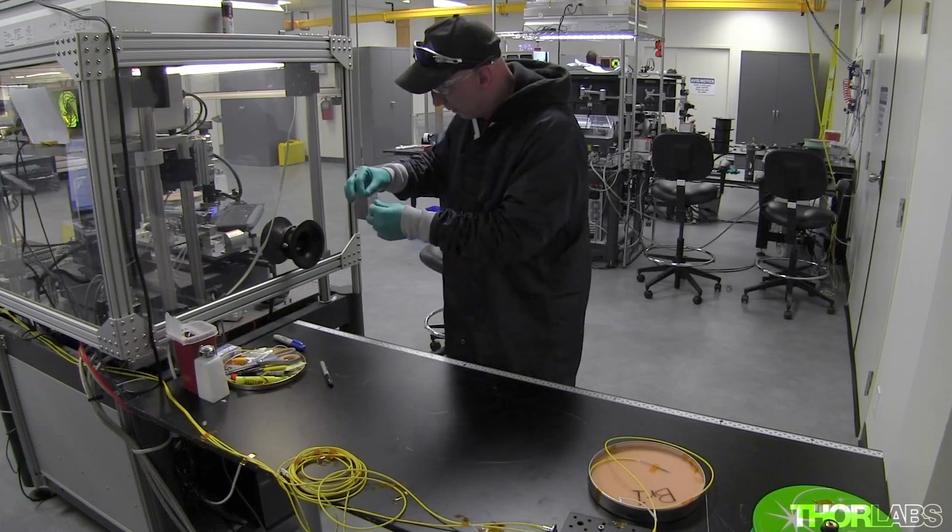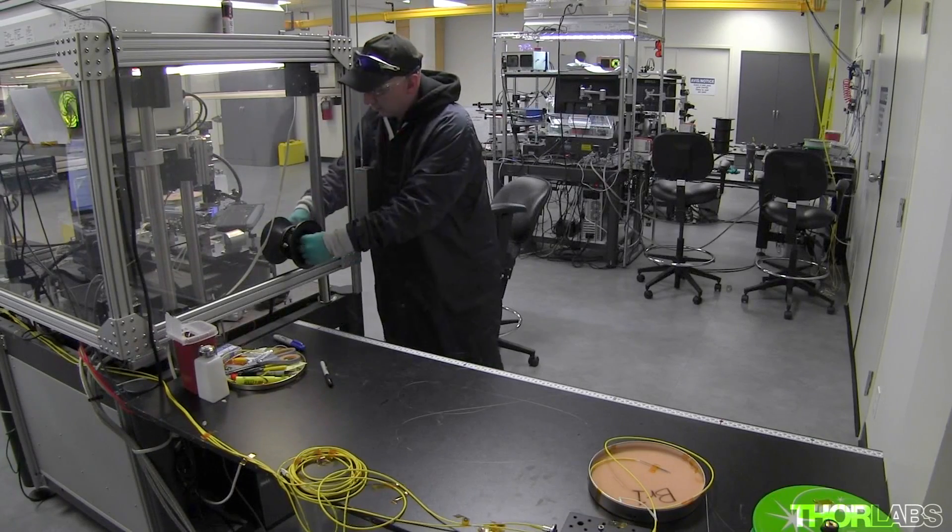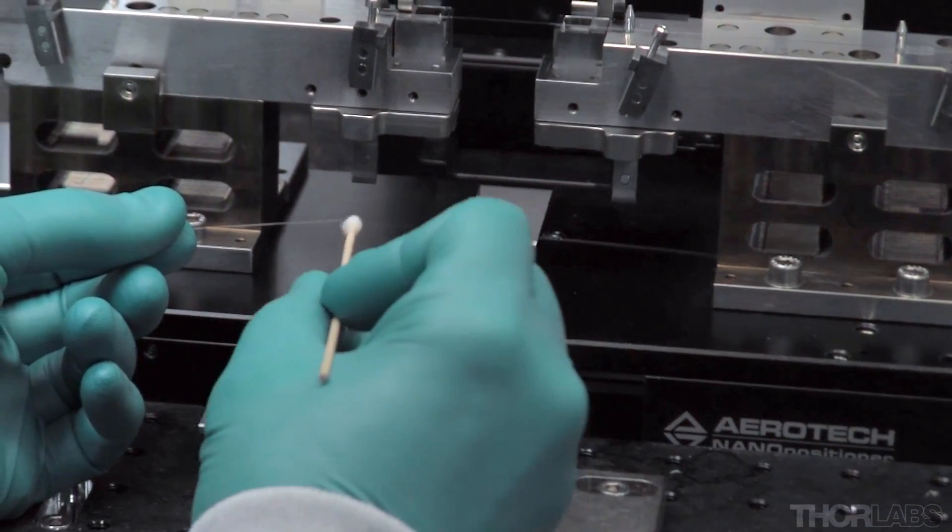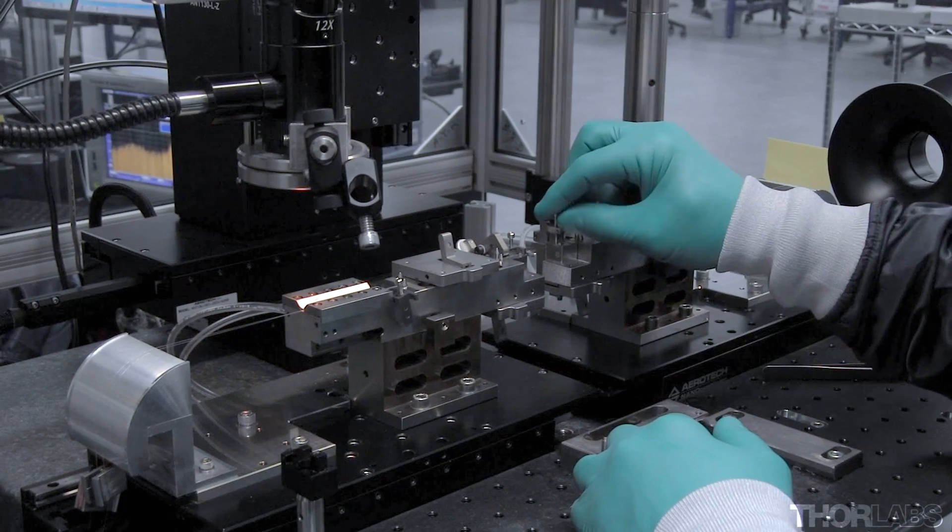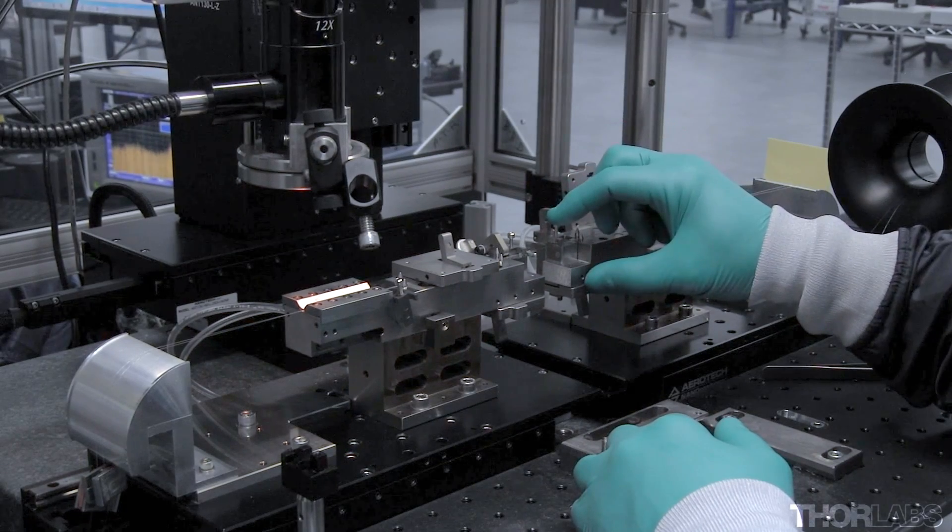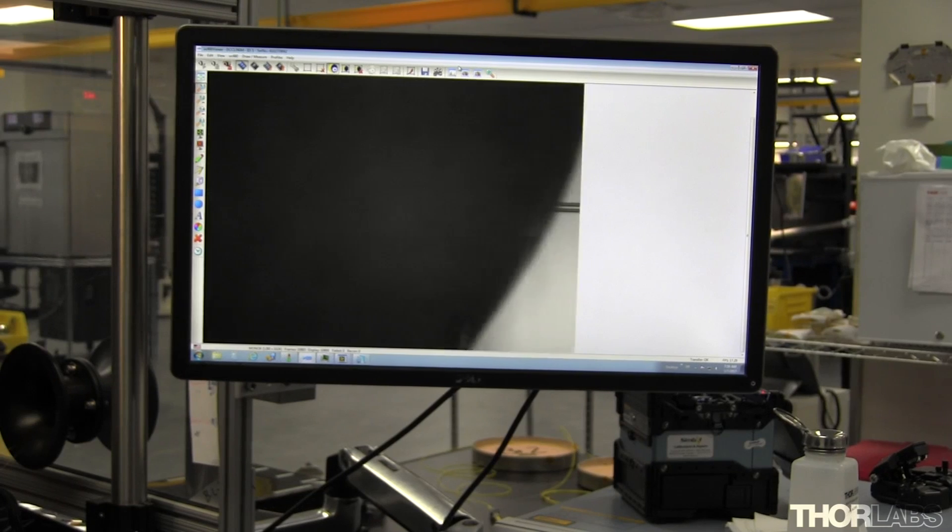The process starts at our fiber fusing stations. Two fibers are cleaned thoroughly before being clamped together in a purpose-built jig, which pushes the fibers directly against one another while applying even tension.